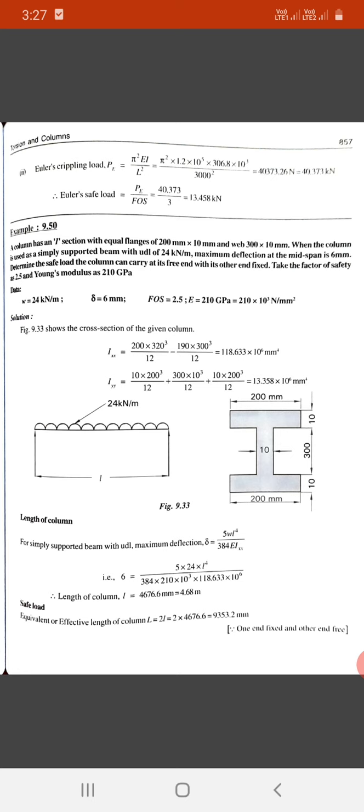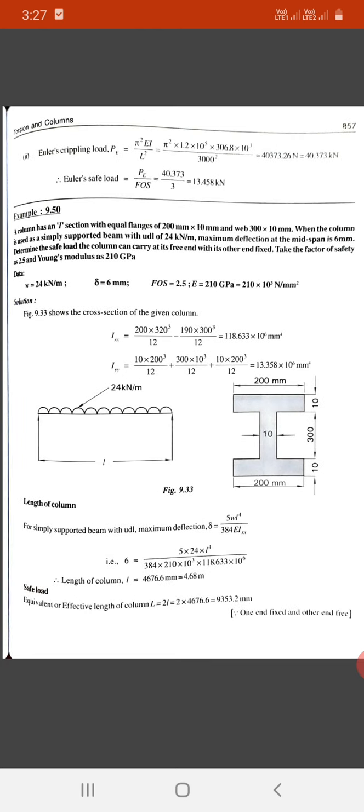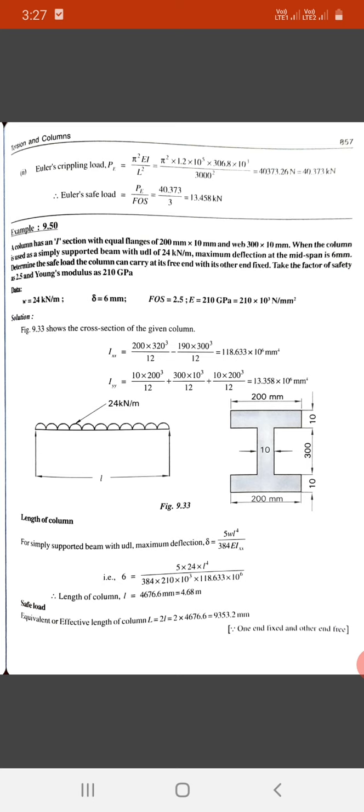Iyy equals 10 times 200 cubed upon 12, plus 12 upon 12, plus 300 times 10 cubed upon 12, plus 10 times 200 cubed upon 12. This equals 13.358 times 10 raised to 6 mm raised to 4.